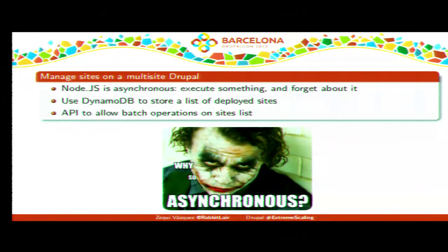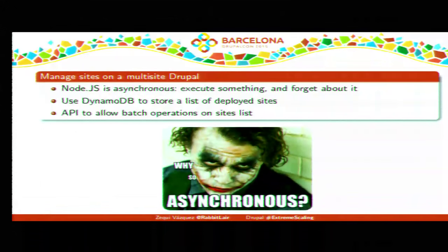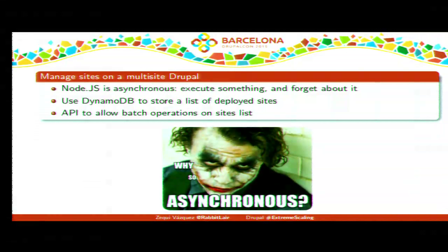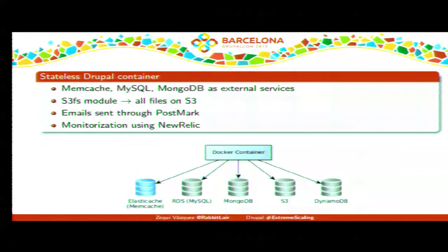We also developed an API in the same app for batch processing. For example: 'There are 2,000 new users who want their sites created by Monday.' No problem — just send a JSON payload to our API and the sites get created. We used queues for that as well.